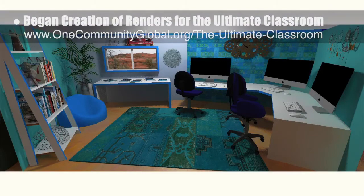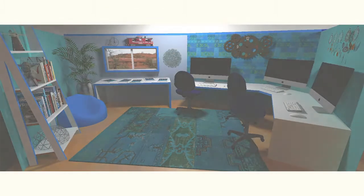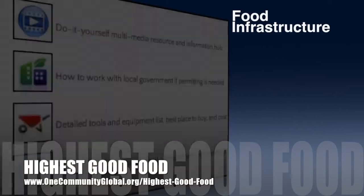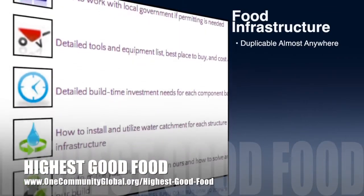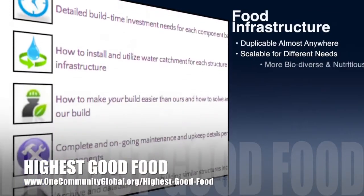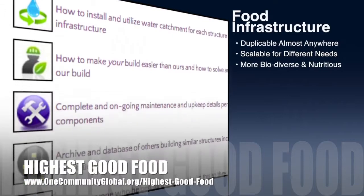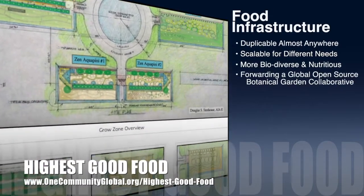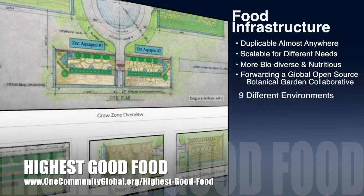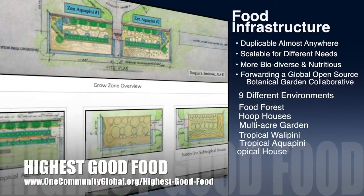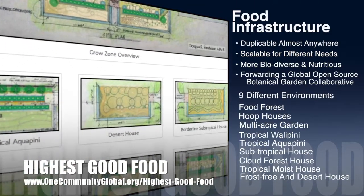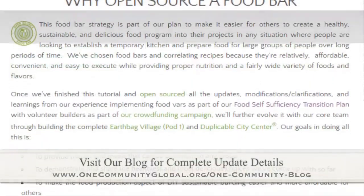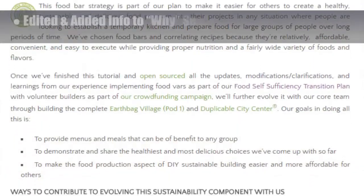One Community's approach to highest good food is duplicable almost anywhere, scalable for different needs, more biodiverse and nutritious, part of forwarding a global open source botanical garden collaborative, and includes nine different free shared and duplicable growing environments. This week the core team edited and added information to the Why section of the food bars page, as you see here.